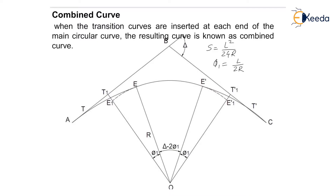Then find the chain age of the beginning point T of the combined curve by subtracting the total tangent length from the given chain age of point of intersection B. This is the same procedure we have seen for simple curve. Obtain the chain age of junction point E of the transition curve with the circular curve by adding the length of transition curve to the chain age of T.